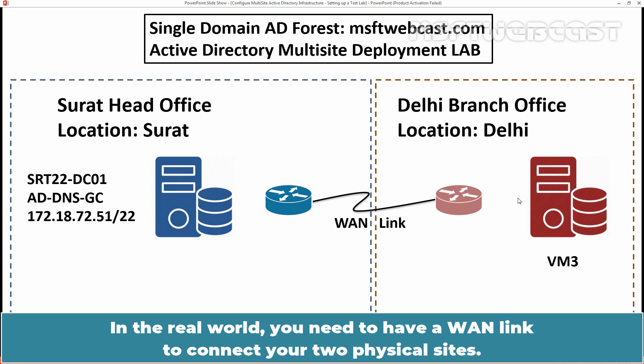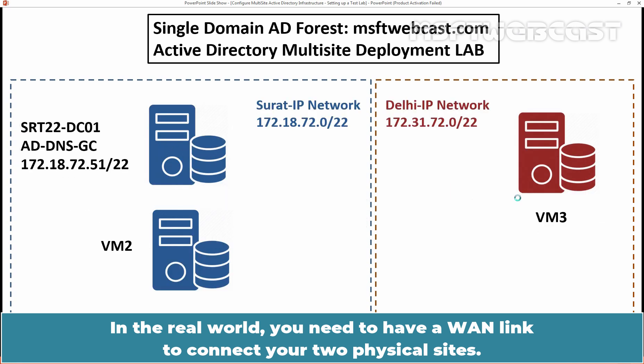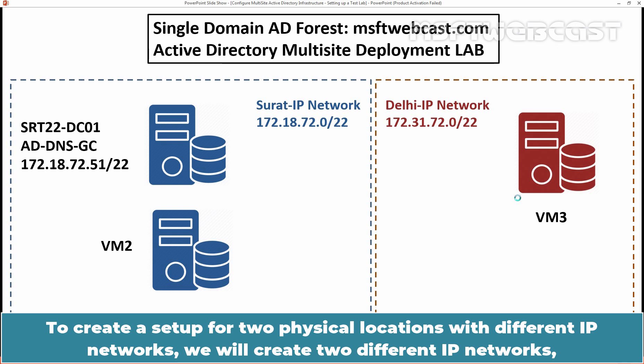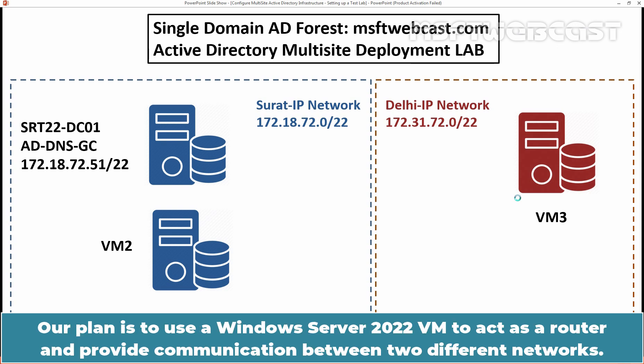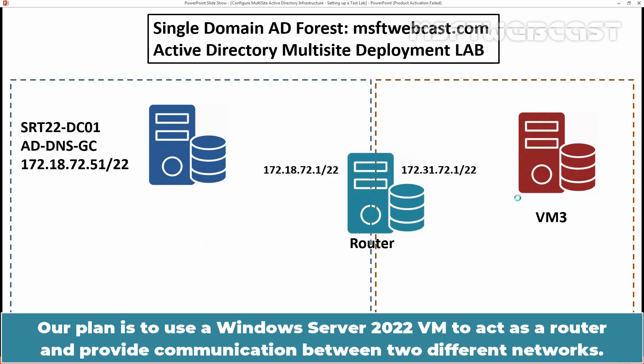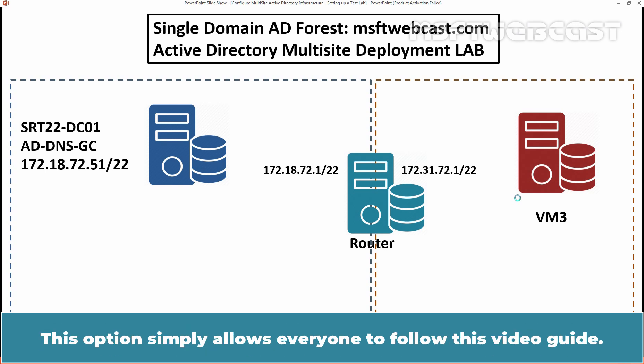In the real world, you need to have a WAN link to connect your two physical sites. To create a setup for two physical locations with different IP networks, we will create two different IP networks so that they cannot communicate with each other directly. The plan is to use a Windows Server 2022 VM to act as a router and provide communication between two different networks. This option simply allows everyone to follow this video guide.